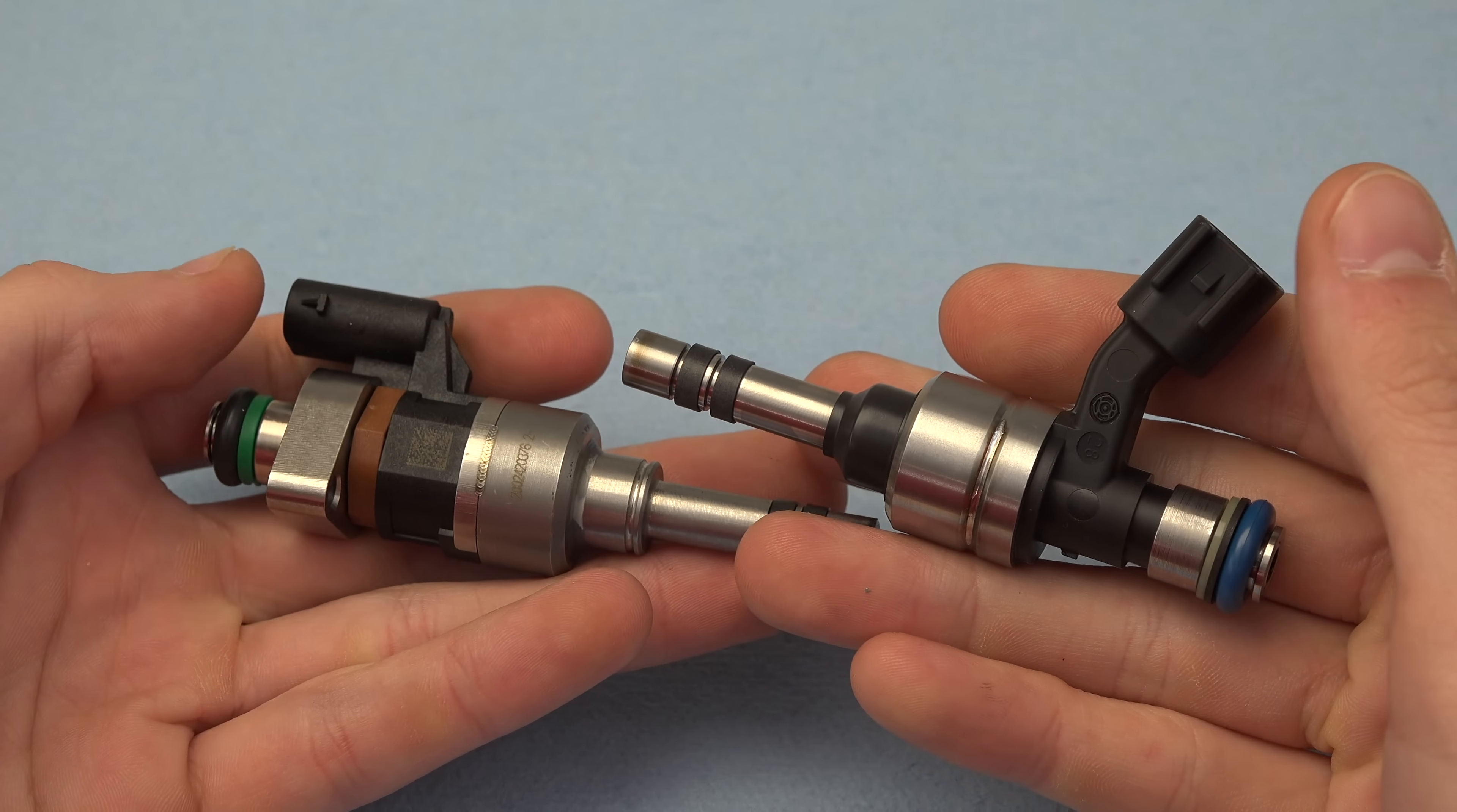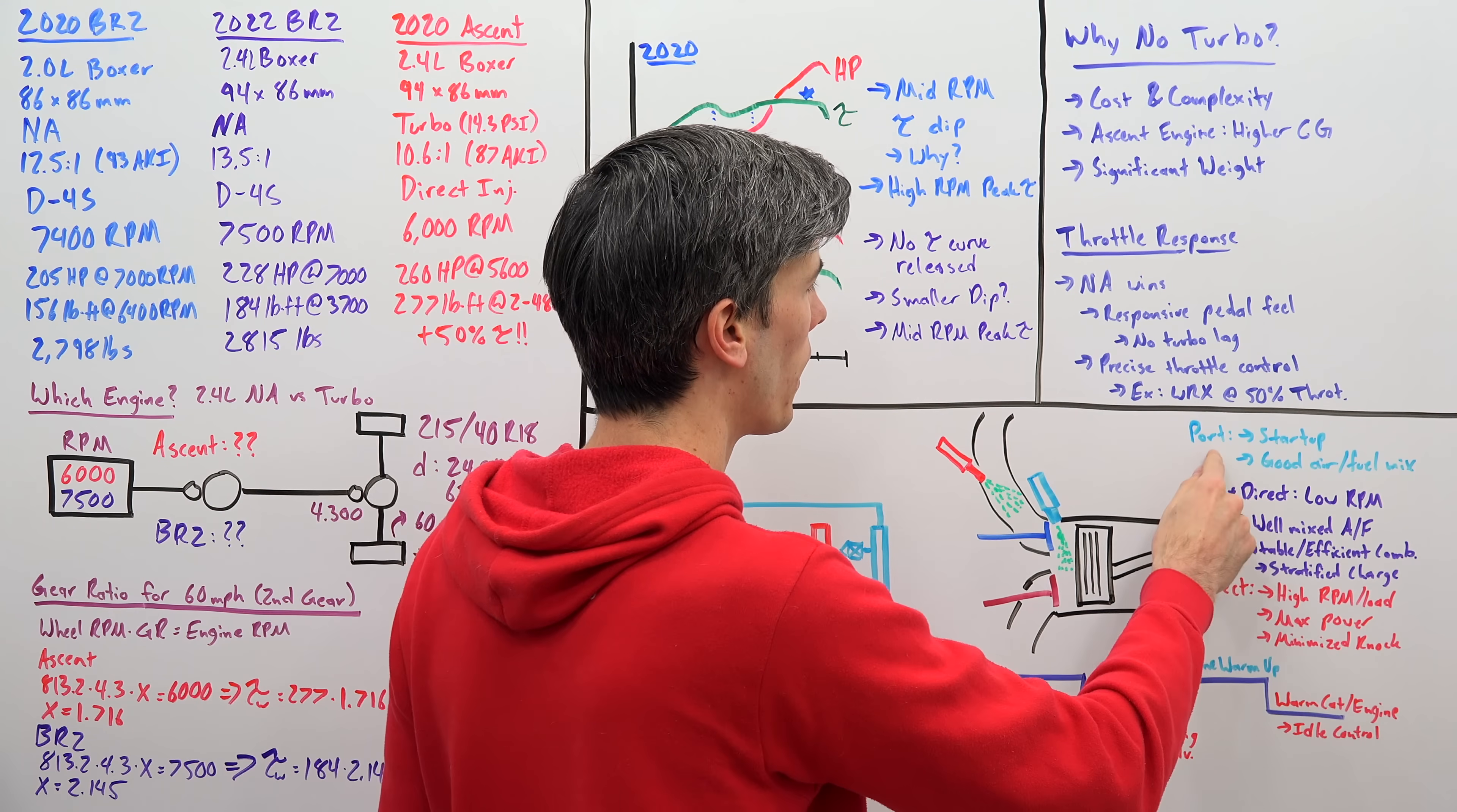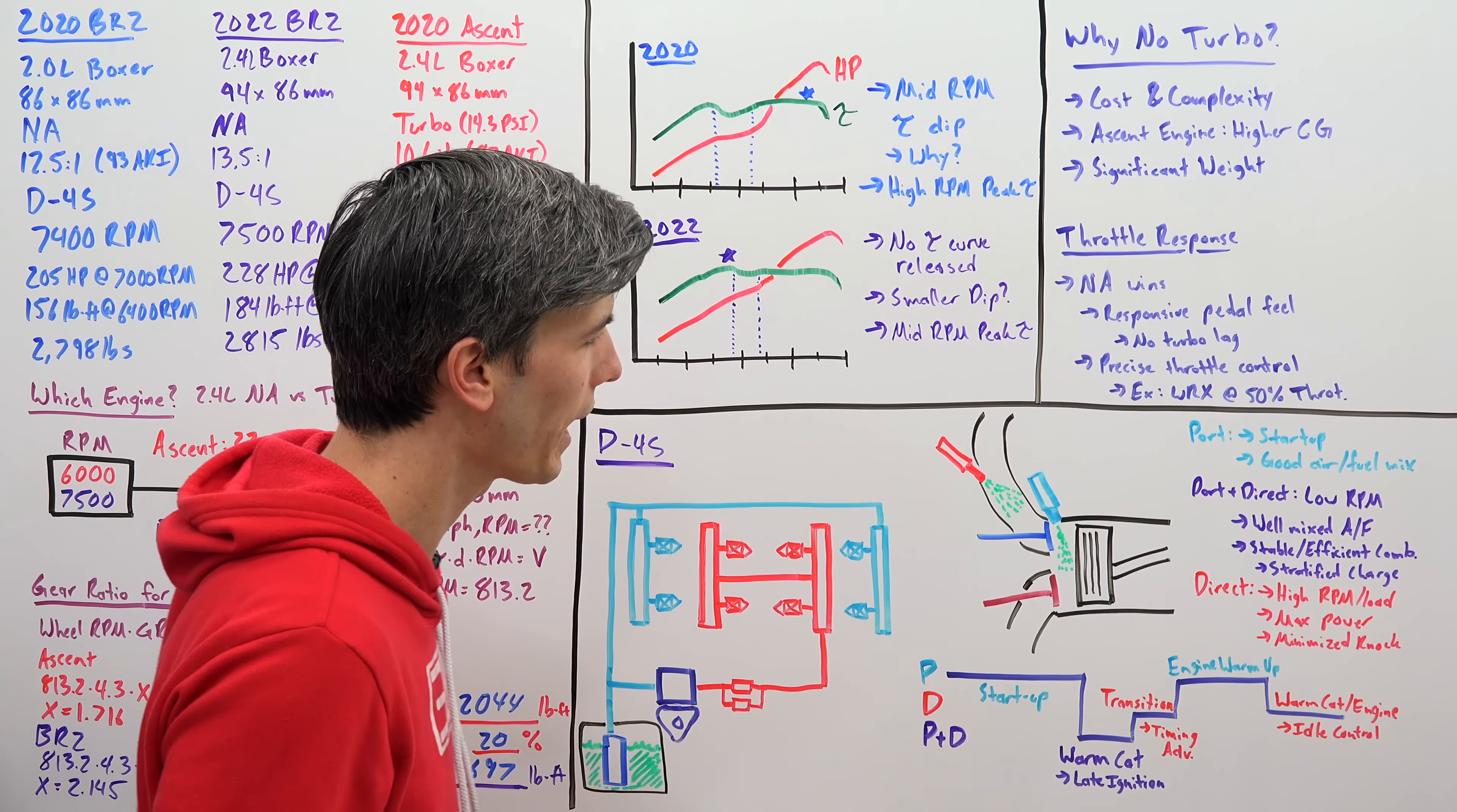Now, what's the purpose? So there's three different ways that you can now spray fuel into the engine. You can just use port, you can just use direct, or you can use a combination of both. So using port, that's important for startup. Port is used exclusively for when you are just cranking and starting up the engine. This helps give you a good air and fuel mixture. It gives it more time for that air and fuel to mix. Of course, if the engine's cold, you're not going to have that fuel vaporized quite as easily. So you want to use that port and give it as much time as possible.